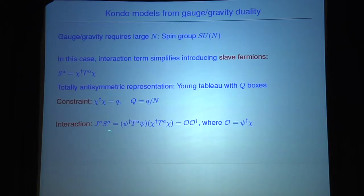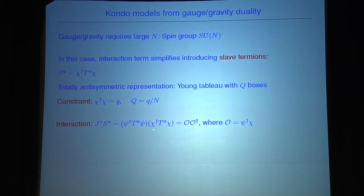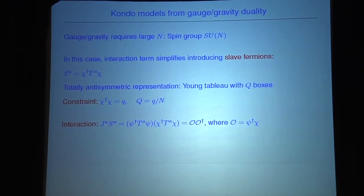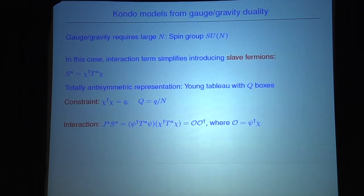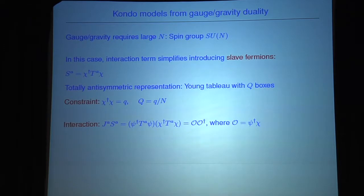In the large-N limit the interaction simplifies using Fierz identities. Evaluating the bilinear, lots of trace terms drop out because they go as 1/N, and we end up with a bilinear in two scalar operators, where there is a complex operator involving one electron and one slave fermion.